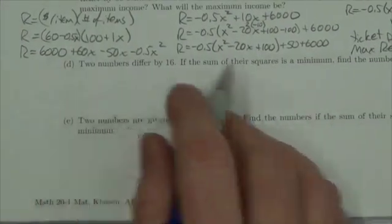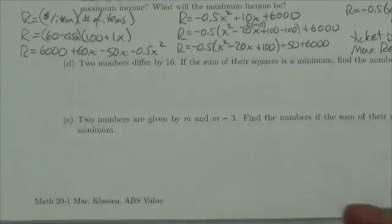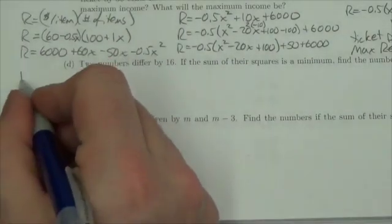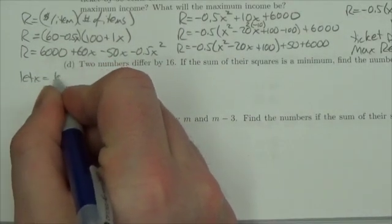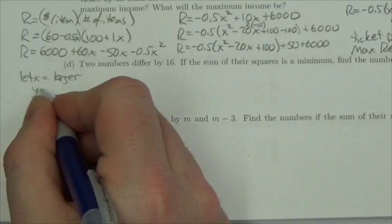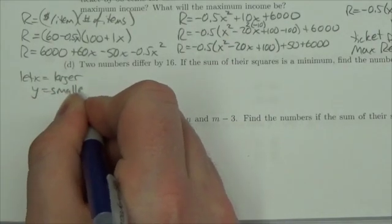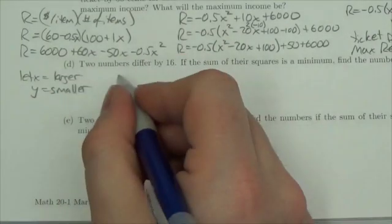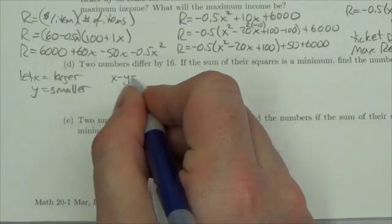Now, two numbers differ by 16. So let's let x be the larger and we'll let y be the smaller. And so two numbers differ by 16, so x minus y will equal 16.